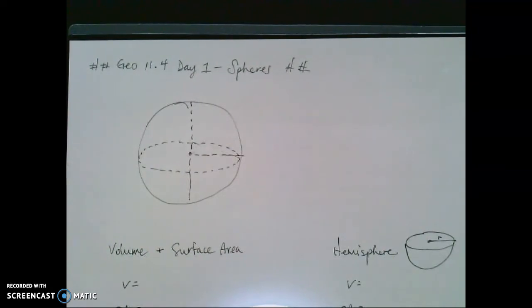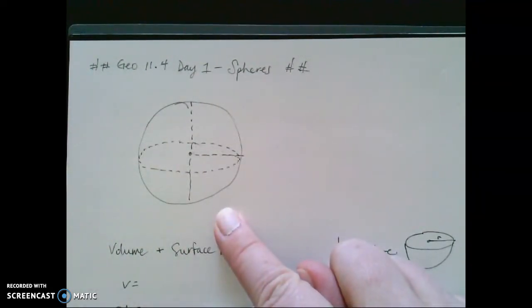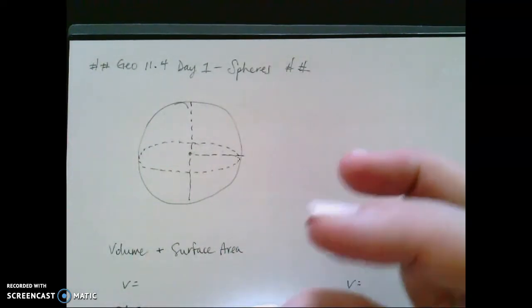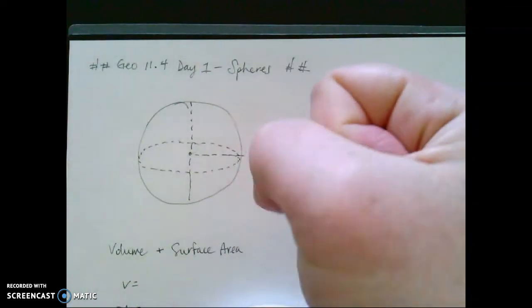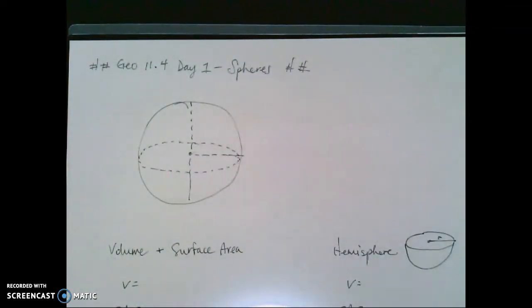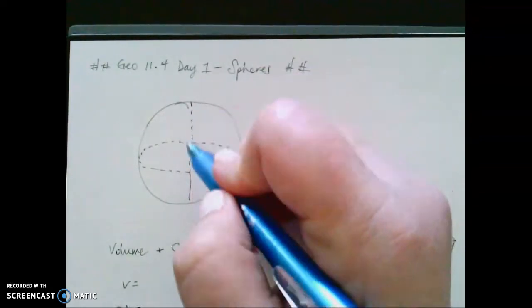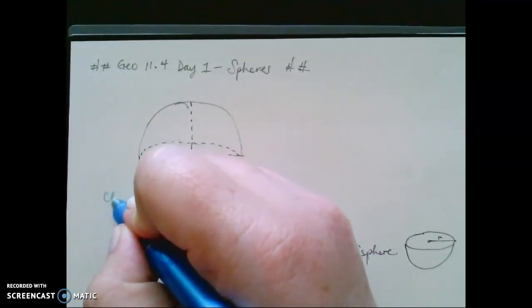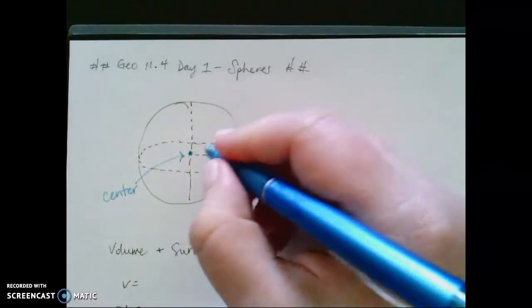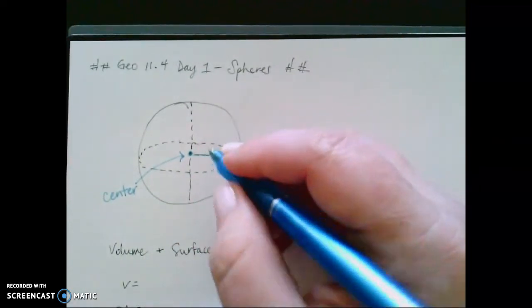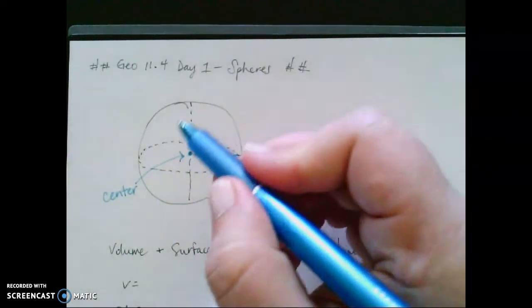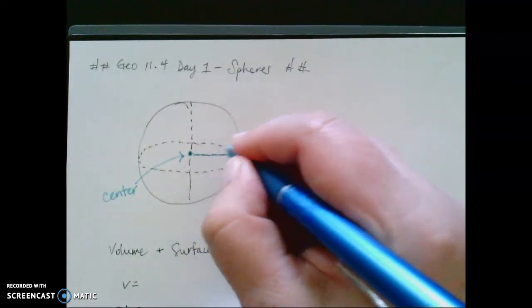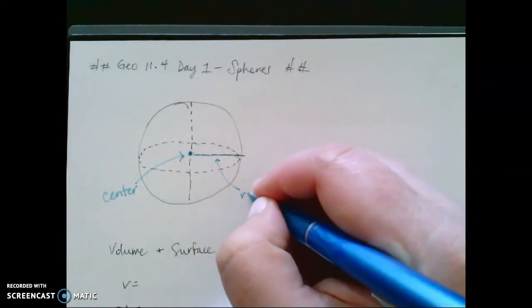But there's some vocabulary we need to be aware of when we're talking about a sphere. So a sphere is that three-dimensional ball, and that ball has a diameter, it has a radius, but it has some other features as well. So we're going to start with some of the basics. The center of the sphere has that same name, that is the center. The radius of the sphere is from the center to the outside point of any edge of that circle. And so that is what we call the radius.